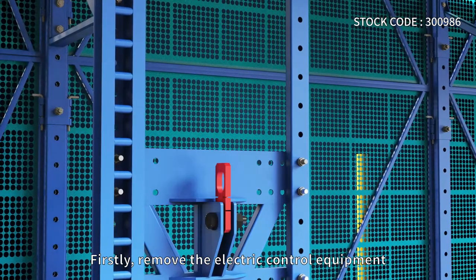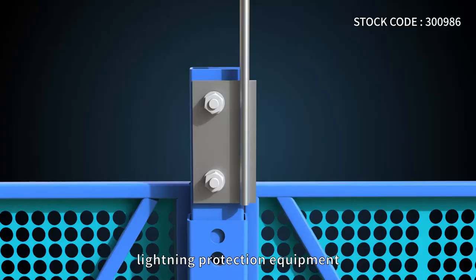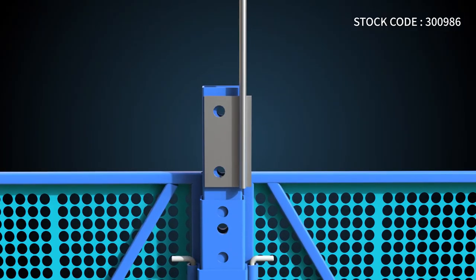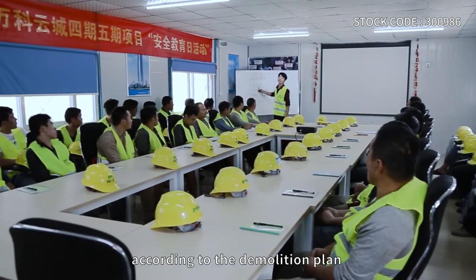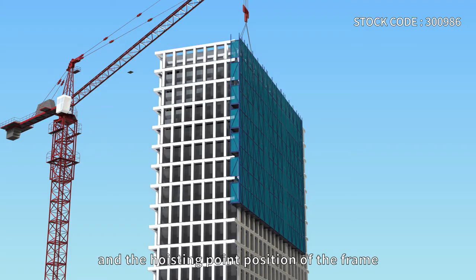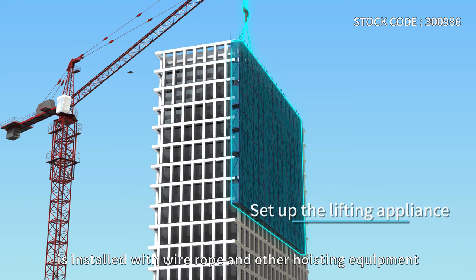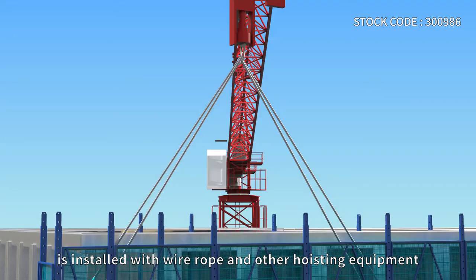First, remove the electric control equipment, electric chain hoist, and lightning protection equipment. Then determine the hoisting point according to the demolition plan, and install wire rope and other hoisting equipment at the hoisting point position of the frame.